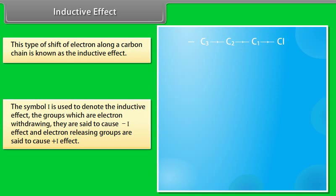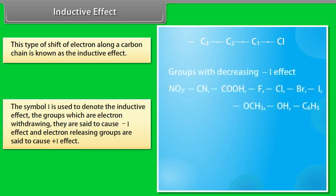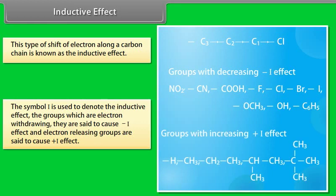Groups which are electron withdrawing are said to cause a negative inductive effect (−I effect), and electron releasing groups are said to cause a positive inductive effect (+I effect).